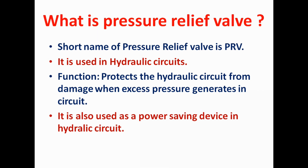Whenever there is excess pressure beyond the design pressure in the circuit, this PRV releases the excess pressure by draining the oil from the circuit and maintains the design pressure in the hydraulic circuit. It is also used as a power-saving device. When actuators like hydraulic cylinders are at the top or bottom position, the hydraulic pump keeps running, causing pressure to rise beyond the design pressure. In such a condition, this pressure relief valve continuously drains the oil to maintain the design pressure.